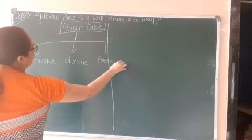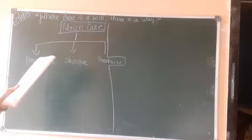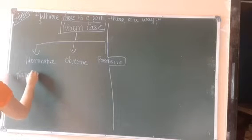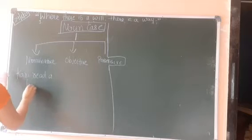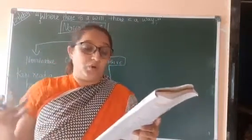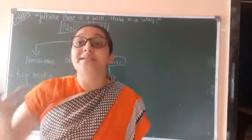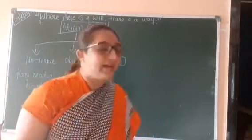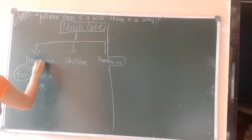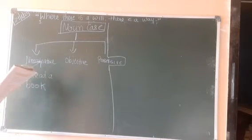Possessive is very easy. First we will talk about nominative. Example sentence: Carry read a book. Nominative case means when a noun or pronoun is used as a subject in a sentence. The action is done by Carry — so Carry will come in nominative case. Carry is the subject in this sentence, so Carry comes in nominative case.